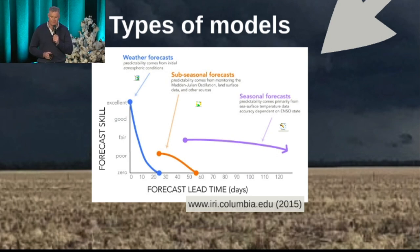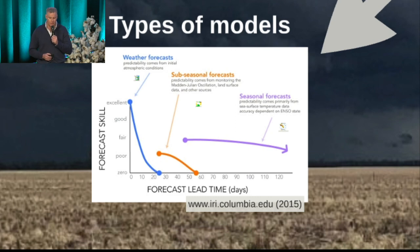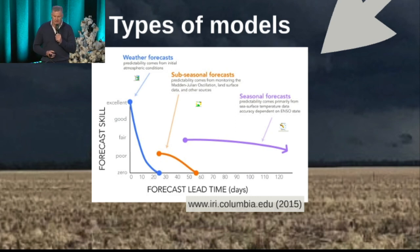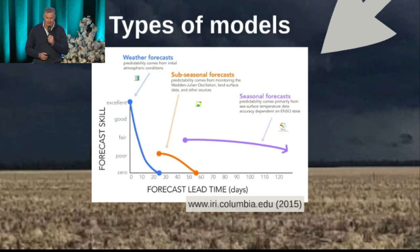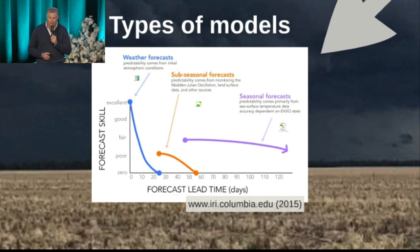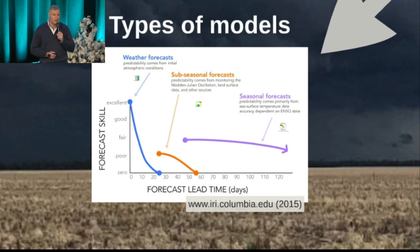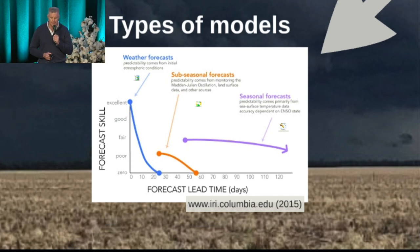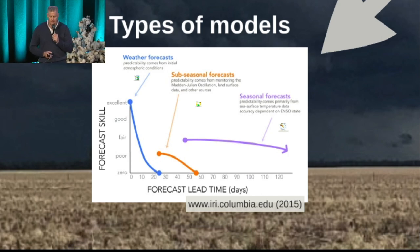Then you've got the sub-seasonal or multi-week forecasts. You can see they're probably the least accurate out of the three. And then the weather forecast, which we're so accustomed to in our day-to-day routine and management. You'll see the accuracy greatly increases as time is reduced.